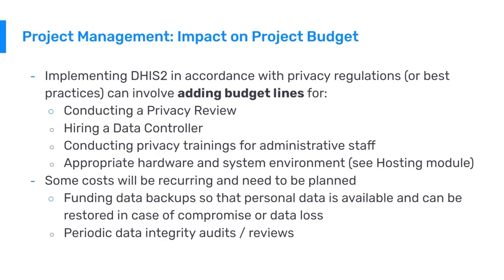It's important to consider the impact on the project budget when taking into consideration privacy and security. Implementing DHIS2 in accordance with privacy regulations and best practices can involve adding budget lines for conducting privacy reviews, hiring a data controller, conducting privacy trainings for administrative staff, and using appropriate hardware and system environment. Some costs will be recurring and need to be planned for, such as funding data backups so that personal data is available and can be restored in case of compromise or data loss, and periodic data integrity audits and reviews.